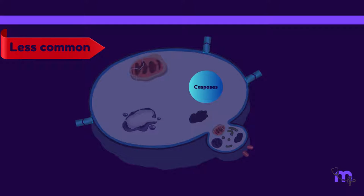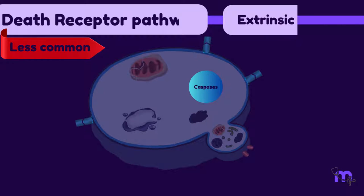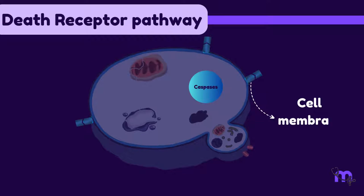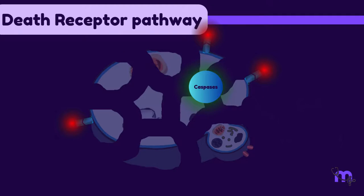The less common pathway is the death receptor or extrinsic pathway. Death receptor is a cell membrane receptor which, when triggered, activates caspases and thereby apoptosis.